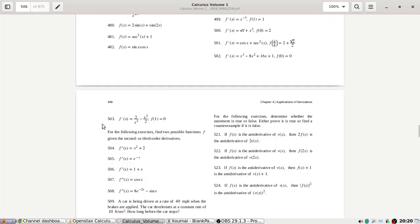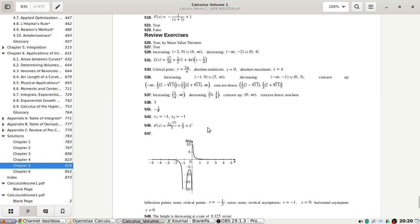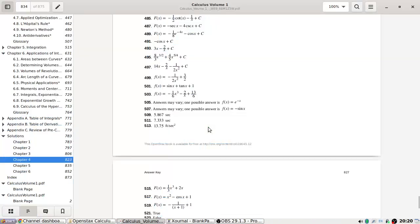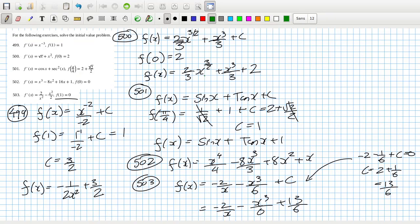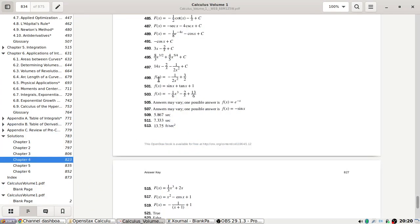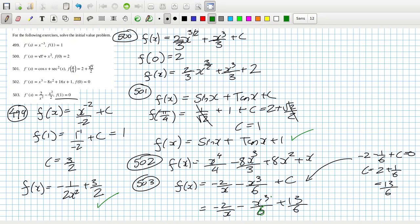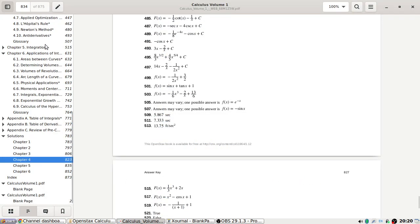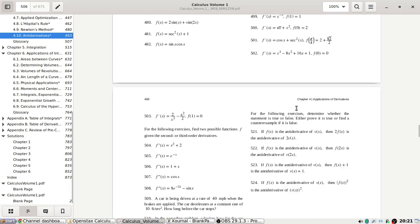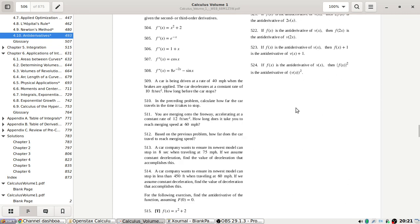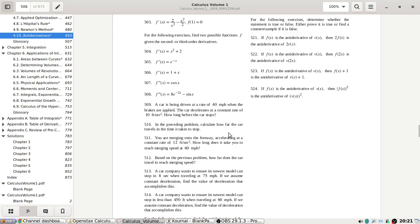Let's check the answers. 499 correct, 501 correct, 503 minus 1 over 6, that's a 6, x cubed, yeah minus 2 over x, yeah plus 13 over 6. Yeah looks good. Okay, good good good.